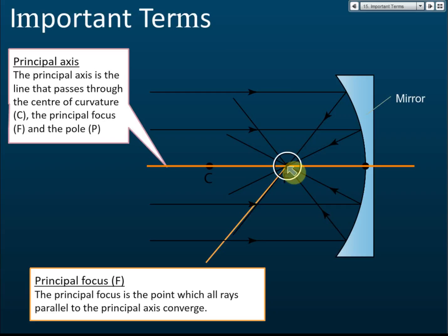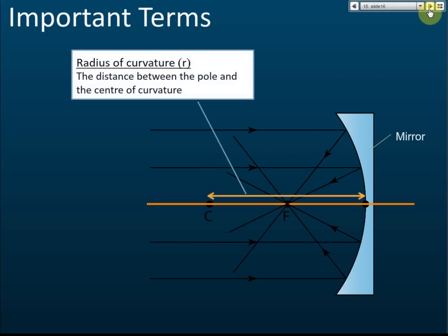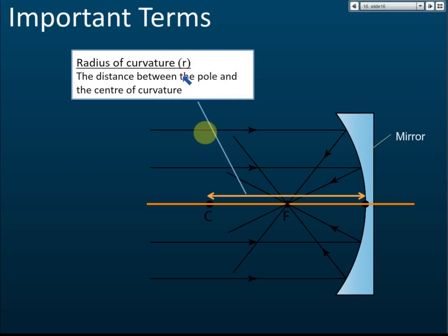The distance from the pole to the center of curvature is called the radius of curvature, denoted by R. It is like the radius of the circle — since this is just a curve, we call it the radius of curvature.